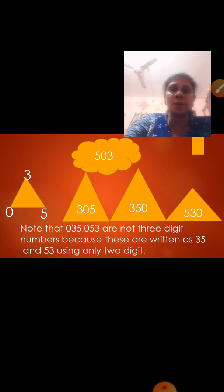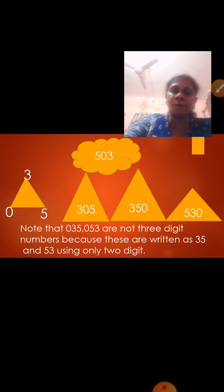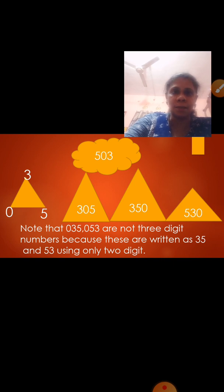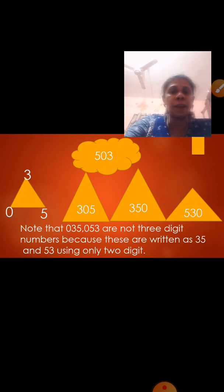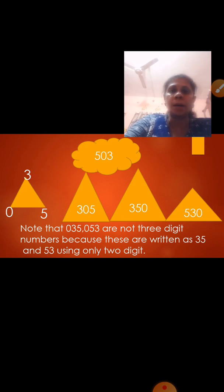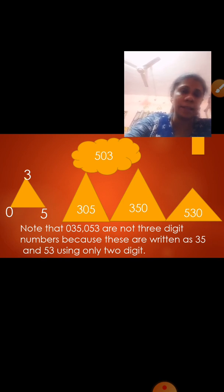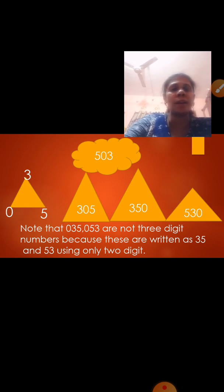Now the next triangle has the numbers 3, 0, and 5. Here we have to note that 035 and 053 can't be used because they are not 3-digit numbers — 0 has no value when written before a number, so 35 and 53 are only 2-digit numbers. The numbers we can form are: 305, 350, 530, and 503.